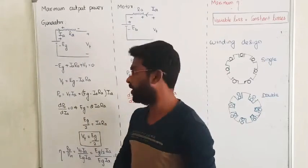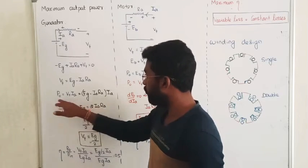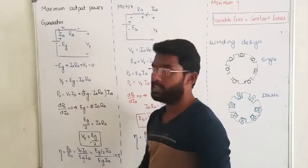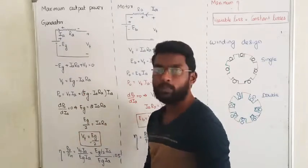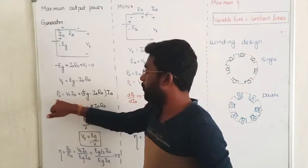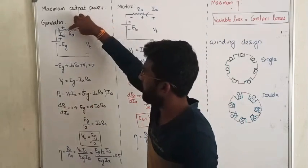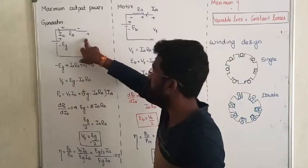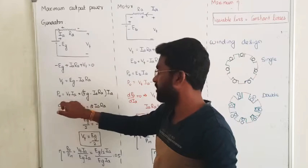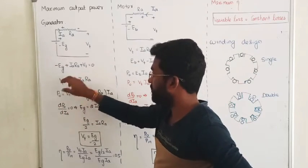Now for the condition of maximum output power, we have to differentiate the output power with respect to armature current. So the output power equals output voltage into output current. The output current is the armature current Ia, and the output voltage is Vt. So output power equals output voltage into output current — that is Vt into Ia.